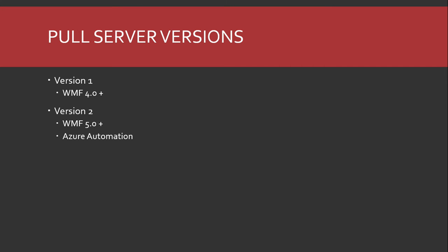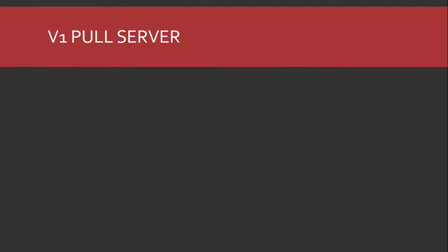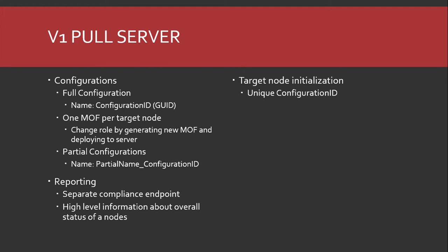V1 is the pull server released with WMF4 — the one you all know and love. V2 is what came out in WMF5 and forward. It's also what is required for Azure Automation, so we've made a lot of protocol improvements. To use Azure Automation you have to have WMF5, which is version 2 of that protocol. In V1, configurations are identified by configuration ID — a unique GUID for each configuration name.